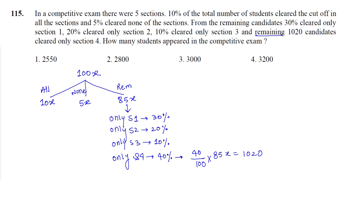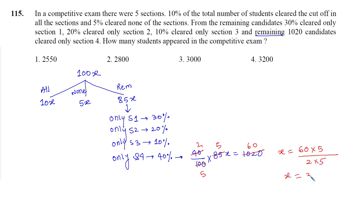Let's solve this. So this gives us 40% of 85x equals 1020, which works out as 34x equals 1020. The value of x is 60 into 5 divided by 2 into 5, so x becomes 30. We need to find the total number of students, which is 100 into 30. Our answer is 3000.